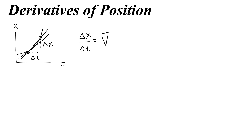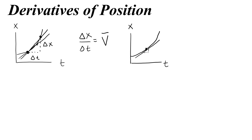To find the velocity at a single moment, we call that instantaneous velocity. To find that, we would draw one point and instead of finding the slope between that point and another, we would draw a tangent line and find the slope of that tangent line.